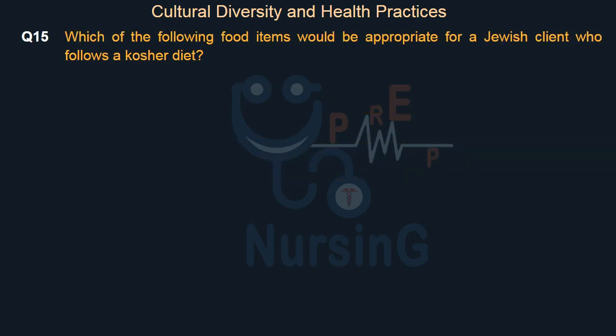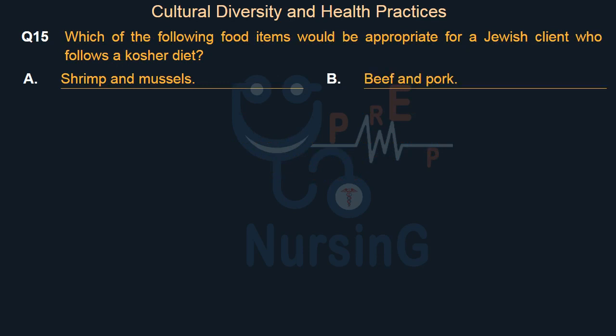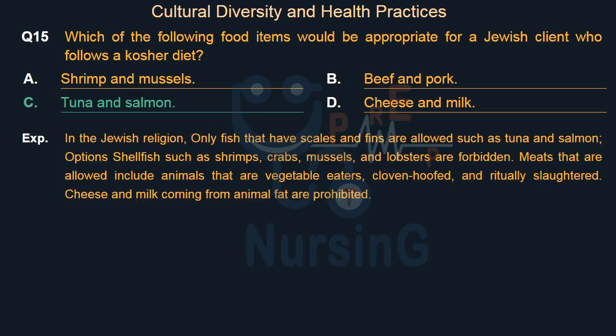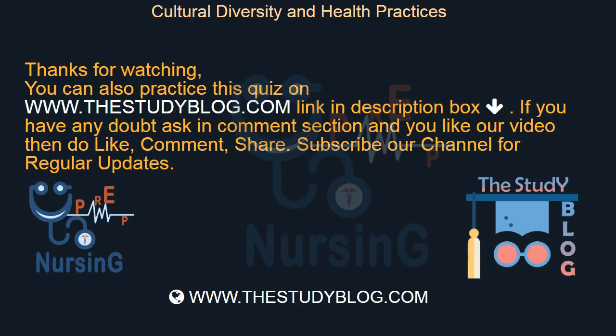Which of the following food items would be appropriate for a Jewish client who follows a kosher diet? Option A: Shrimp and mussels. Option B: Beef and pork. Option C: Tuna and salmon. Option D: Cheese and milk. The right answer is Option C — Tuna and salmon. In the Jewish religion, only fish that have scales and fins are allowed, such as tuna and salmon. Shellfish such as shrimp, crabs, mussels, and lobsters are forbidden. Permitted meats include animals that are vegetable eaters, cloven-hoofed, and ritually slaughtered. Cheese and milk from animal fat are also prohibited.